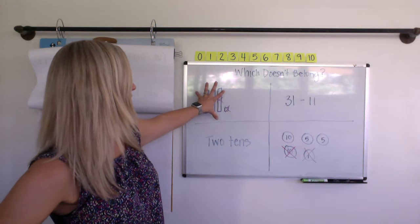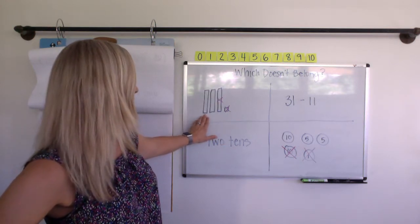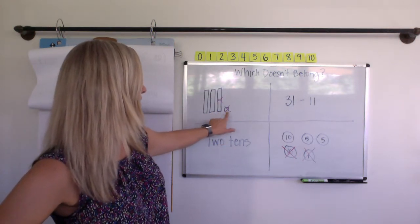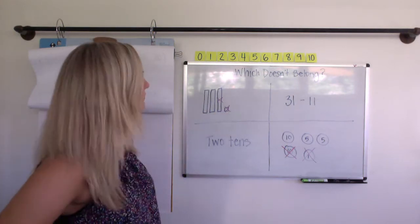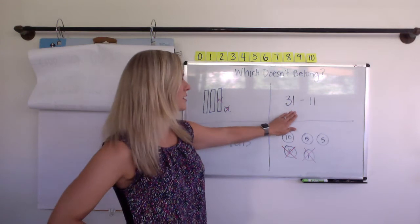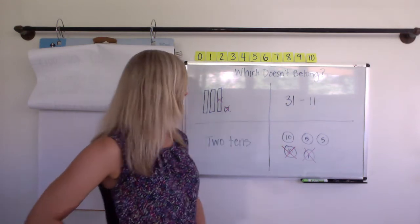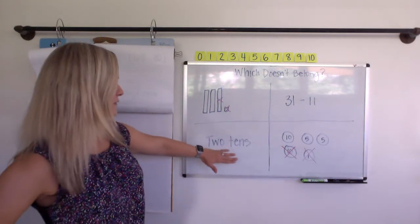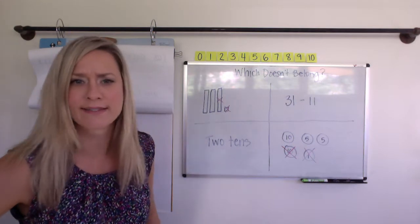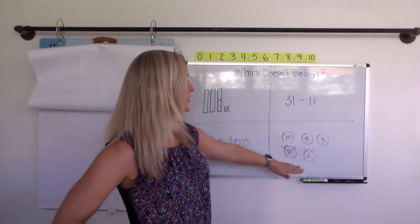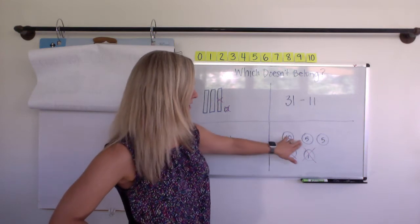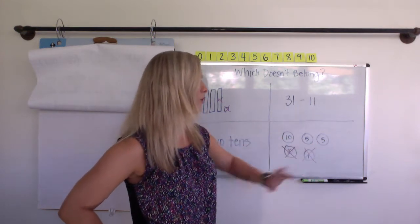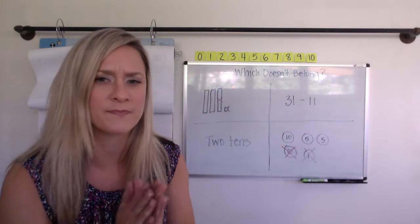We've got this right here showing a 10, 20, 30, 31. Then we've got some crossed out. We've got this over here, 31 minus 11. We've got this right here that just says two tens. And then we've got this one here that says 10, 10, 5, 5, 1 with some crossed out.